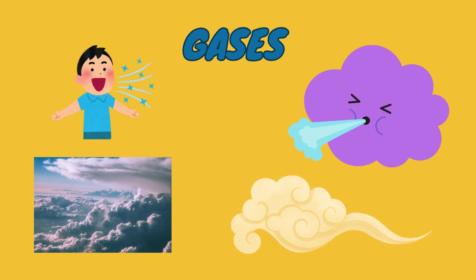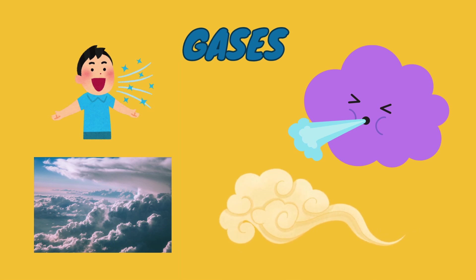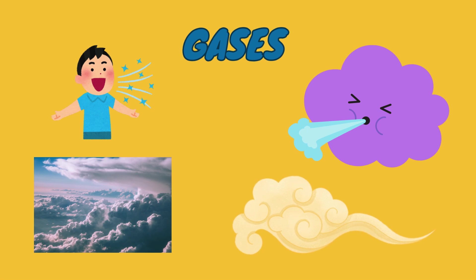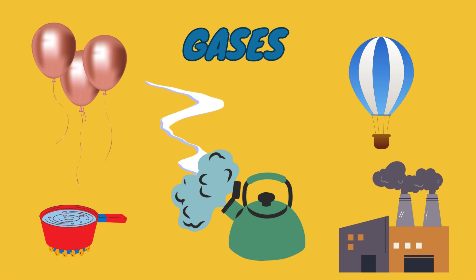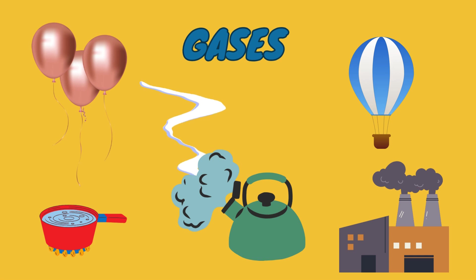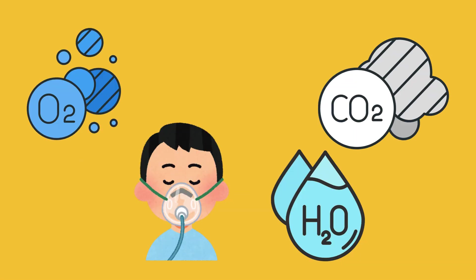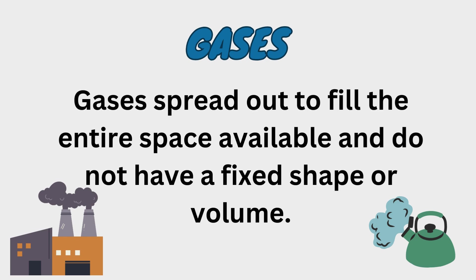The third state of matter is gas. Gases are everywhere in our surroundings. The best example of gas is air that surrounds us. Another example is steam, which we can see when water boils and turns into steam. Oxygen and carbon dioxide are also gases. Gases spread out to fill the entire space available and do not have a fixed shape or volume.